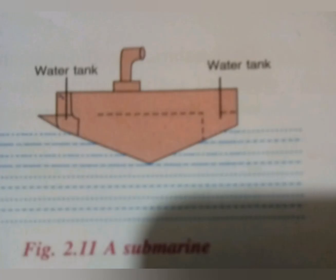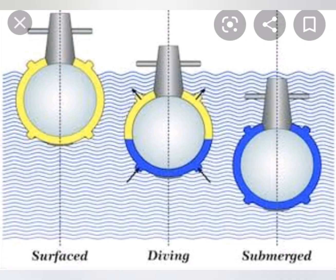The fourth application is flotation of a submarine. A submarine is a fish-shaped watercraft provided with several water tanks. A submarine can be made to dive into water or rise up to the surface as desired. To make a submarine dive, the tanks are filled with water so that the average density of the submarine becomes greater than the density of seawater and it sinks. On the other hand, to make the submarine rise up to the surface, these tanks are emptied, making the average density of the submarine less than the density of seawater, so the submarine rises to the surface.